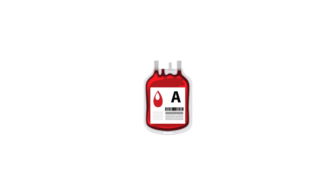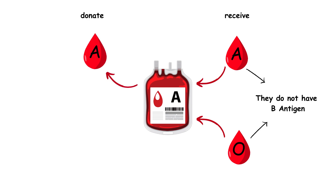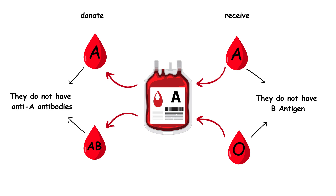People with type A blood can safely receive blood from type A and type O donors, as neither of these types have B antigens which would be attacked by the anti-B antibodies. However, they can only donate to individuals who have type A or type AB blood, as the A antigens can trigger an immune response in those with different blood types. This blood type is relatively common and is important in the context of transfusions and organ donations.